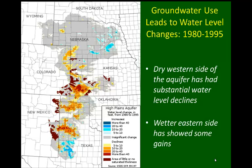Looking at changes from 1980 to 1995, a 15-year period, the gray color dominating most of the Ogallala Aquifer indicates insignificant change. Blue colors indicate greater increases in water level, and red indicates declines. Where changes have occurred, we see drops of 10 to more than 40 feet in many places across the southern part of the Ogallala Aquifer, from central Kansas down to north Texas. The southernmost part of the Ogallala in Texas, however, appears to have an increase in water level of about 10 to 20 feet over that period.